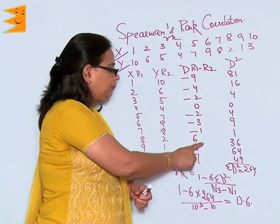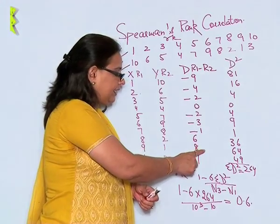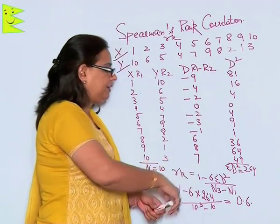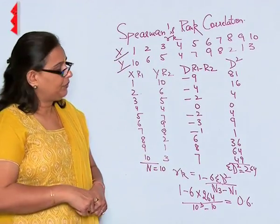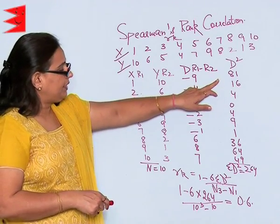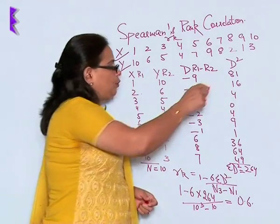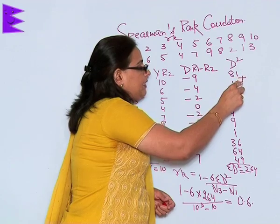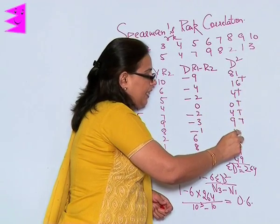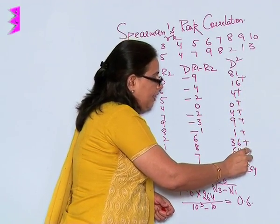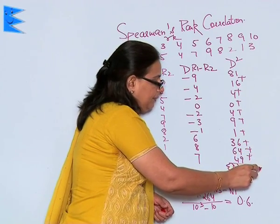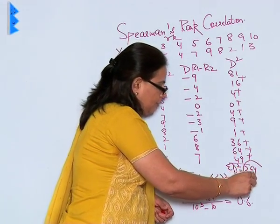1 into 1 is 1, 6 into 6 is 36, 8 into 8 is 64, 7 into 7 is 49. Now I will have to take out the sigma d square, which means 81 plus 16 plus 4 plus 0 plus 4 plus 9 plus 1 plus 36 plus 64 plus 49 is 264.